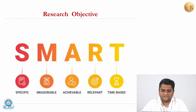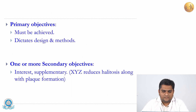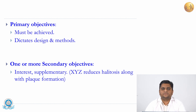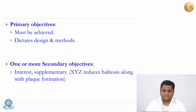Your research objective should follow the SMART methodology — it should be Specific, Measurable, Achievable, Relevant, and Time-based. There are two types of objectives: primary and secondary. Primary objectives must be achieved; they dictate the design and methods. One or more secondary objectives may be there which are supplementary and may not be the main focus, but may be one of the findings that supports the research — for example, XYZ not only reduces plaque but also reduces halitosis along with plaque formation could be a secondary objective.